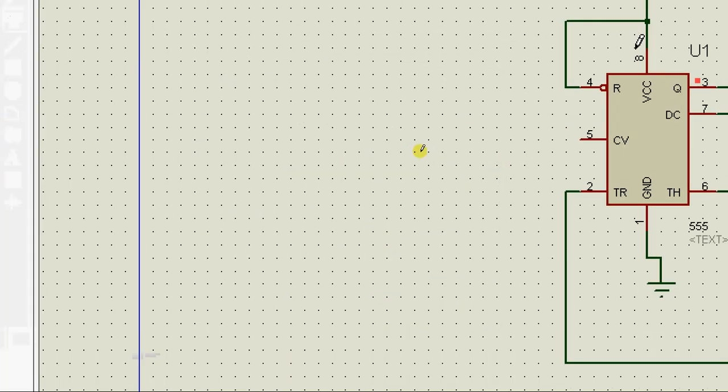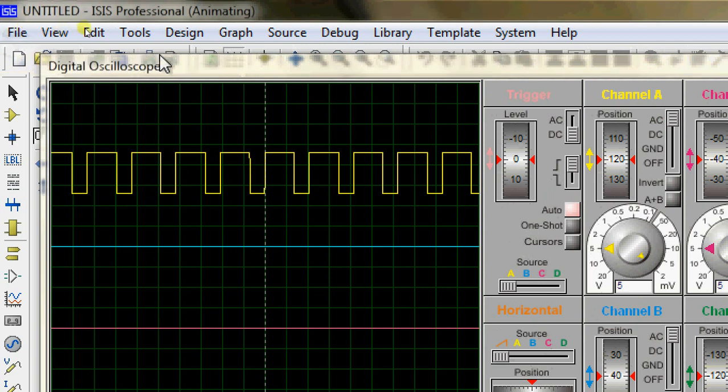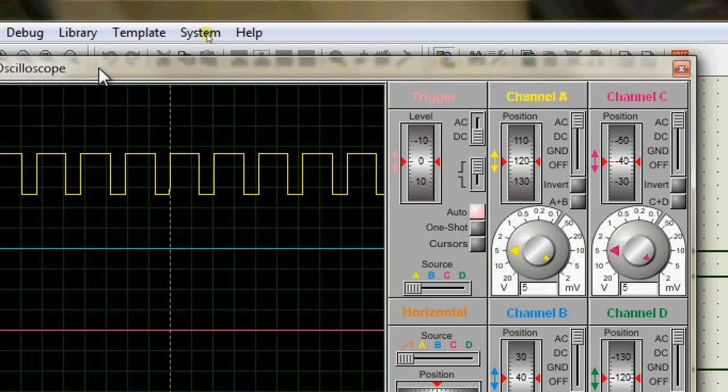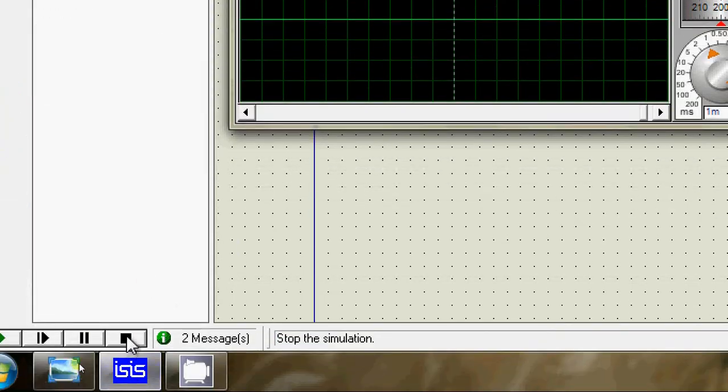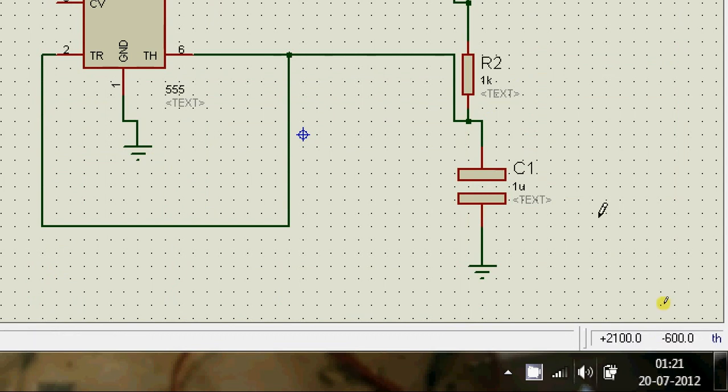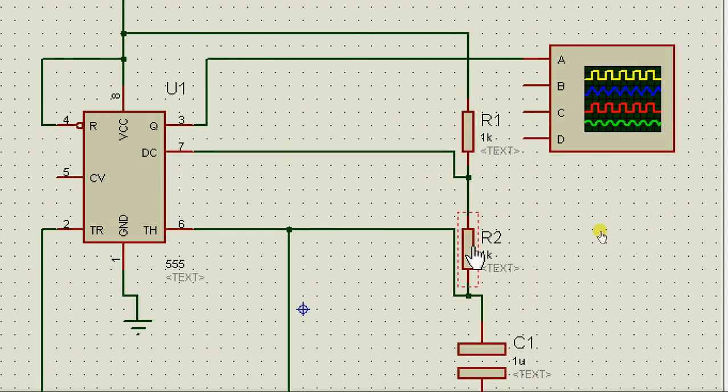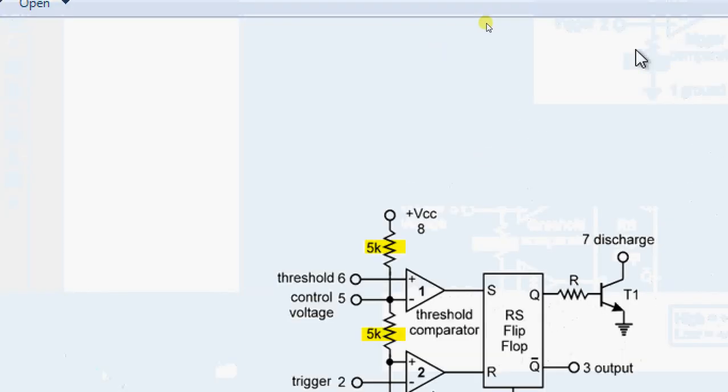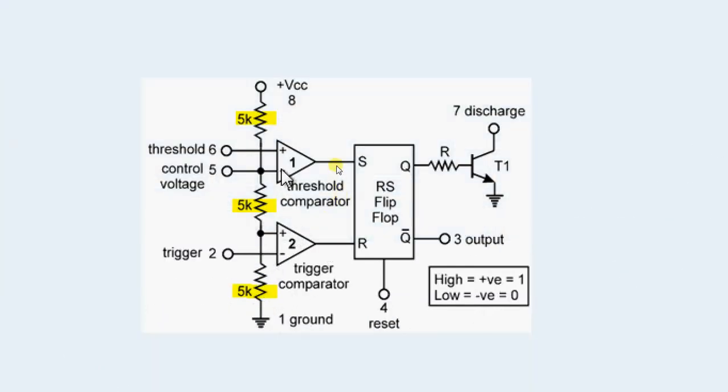First, change this to 1 microfarad and run the circuit. We have a beautiful square wave. Basically, this circuit behaves as a pulse generator. Let's study how this works. The capacitor charges via these two resistors, R1 and R2.